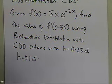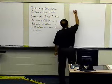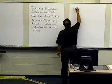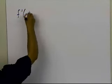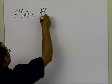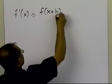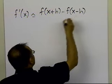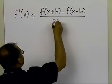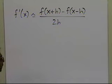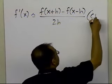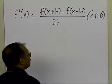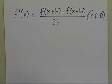The first thing we need to do is use the central divided difference scheme: f'(x) ≈ [f(x+h) − f(x−h)] / (2h). That's the central divided difference approximation for the first derivative.